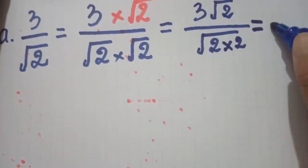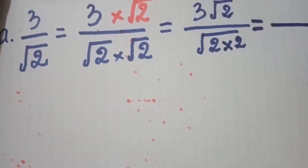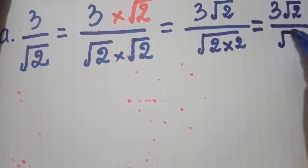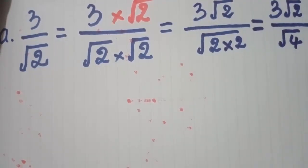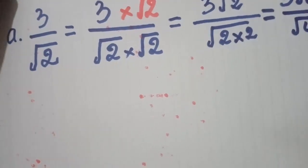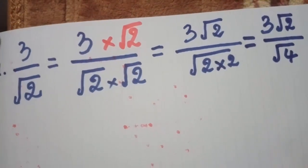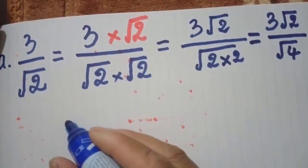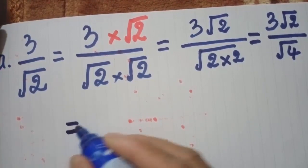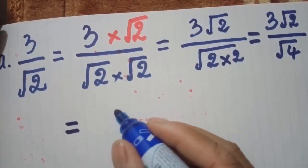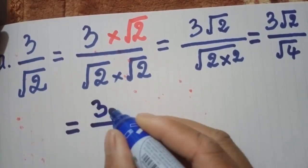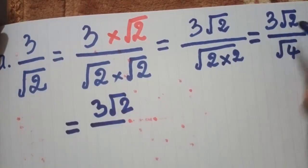Yes, so now we have radical 2 times radical 2 which equals radical 4. Radical 4 we can take outside the radical. Now we see, it equals 3 radical 2 over 2.